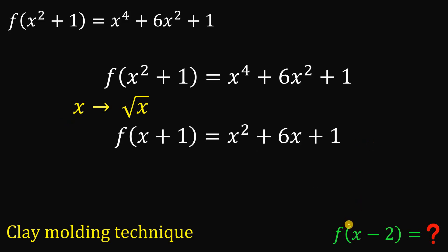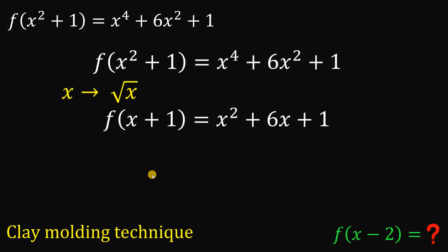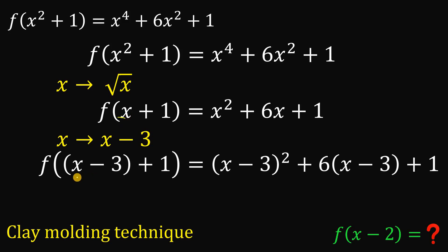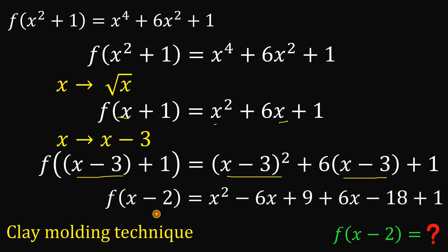Now we need two moldings to reach f of x minus 2. We now have x plus 1. To make this x minus 2, we need to replace all of this x with x minus 3. That's the second molding. If we do that, we have f of x minus 3 plus 1, which gives us x minus 2 — which is the goal in this question.